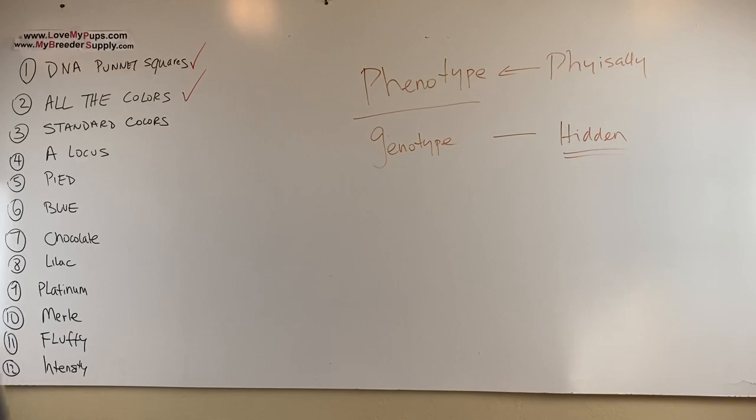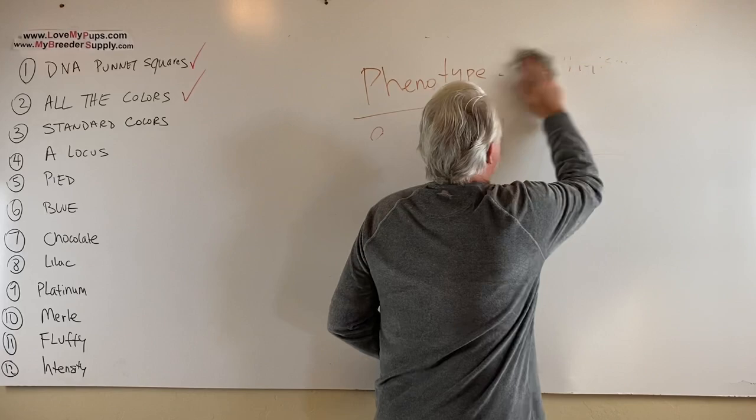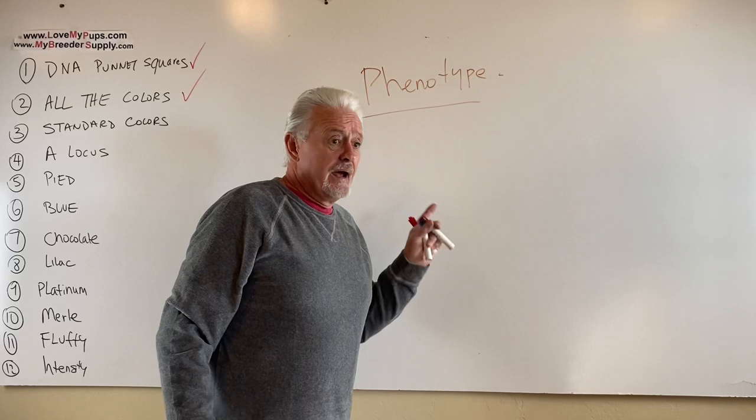This is important because when we start talking about what you can put in the show ring, we're talking about phenotypes. You can have a dog that meets the AKC standards for phenotype to show in the show ring, but it can have lots of other colors in its genotype and can produce exotic dogs that could then not be in the show ring.